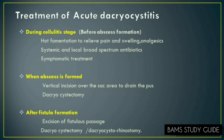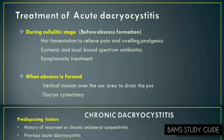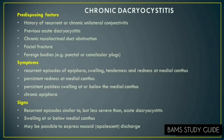There are three stages of acute Dacryocystitis: stage of cellulitis, stage of lacrimal abscess formation, and stage of fistula formation. During the cellulitis stage, hot fermentation can relieve pain and swelling, along with systemic and local broad-spectrum antibiotics and symptomatic treatment. When abscess is formed, a vertical incision over the sac area can be done to drain the pus, and Dacryocystectomy can also be performed. In the third stage, excision of the fistulous passage and Dacryocystectomy or Dacryocystorhinostomy should be done.